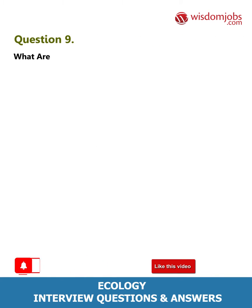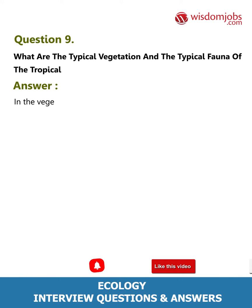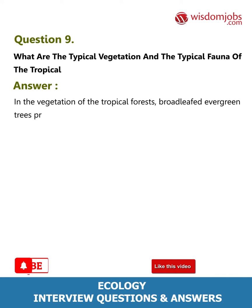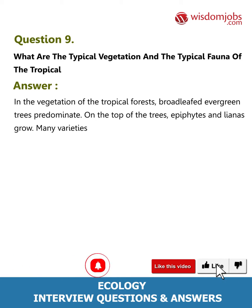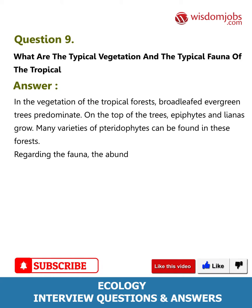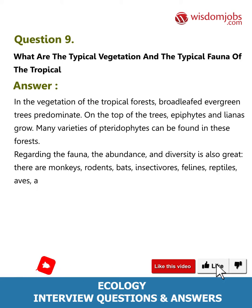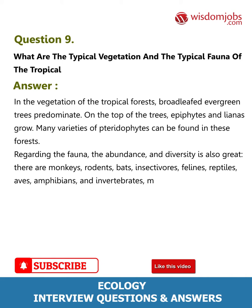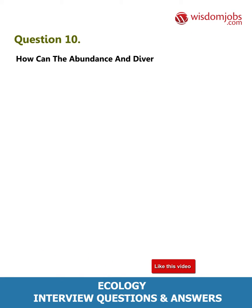Question 9: What are the typical vegetation and the typical fauna of the tropical forests? In the vegetation of tropical forests, broad-leafed evergreen trees predominate. On the top of the trees, epiphytes and lianas grow. Many varieties of pteridophytes can be found in these forests. Regarding the fauna, the abundance and diversity is also great; there are monkeys, rodents, bats, insectivores, felines, reptiles, birds, amphibians, and invertebrates, mainly insects.